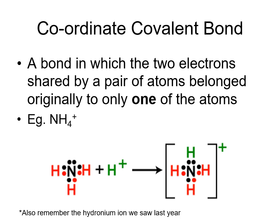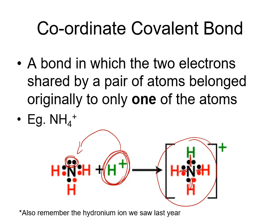A coordinate covalent bond forms when a species with no electrons bonds to another molecule by using that molecule's lone pair. For example, a hydrogen ion (H⁺) has no electrons, yet it can bond to ammonia (NH₃): nitrogen's lone pair is shared with the hydrogen ion, and the hydrogen ends up bonded to nitrogen just like the other hydrogens, though the overall structure carries a positive charge because H⁺ brought no electron. The same thing happens with hydronium: when H⁺ meets water, it shares the lone pair from oxygen, forming H₃O⁺ through a coordinate covalent bond.